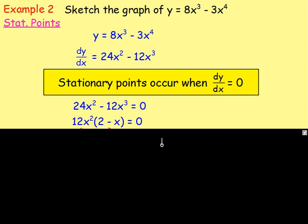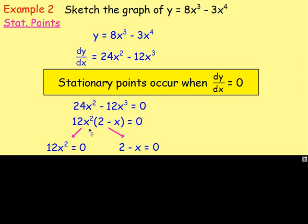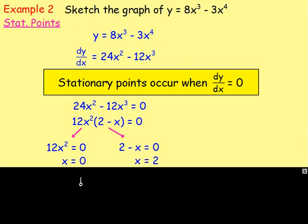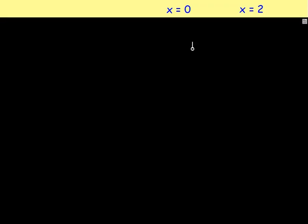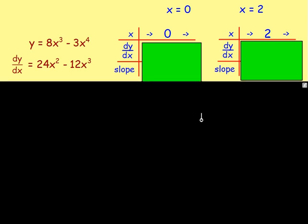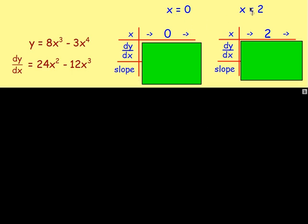Set each factor equal to zero: 12x squared equals 0 gives x equals 0, and 2 minus x equals 0 gives x equals 2. So the x-values of the stationary points are 0 and 2. Remember, whenever you get the x-values, you always have to use your nature table. We've got two nature tables this time, one for each value of x.